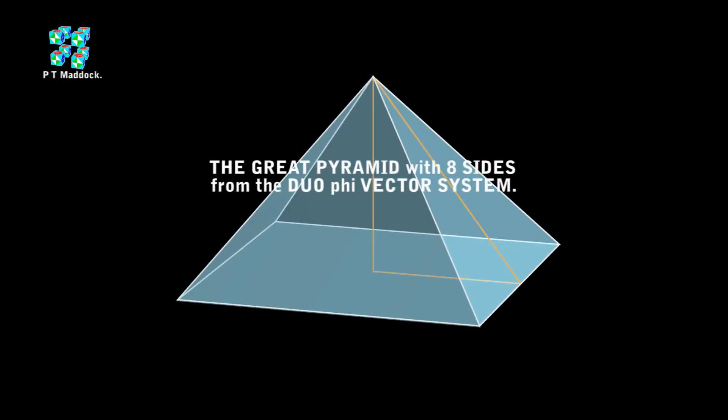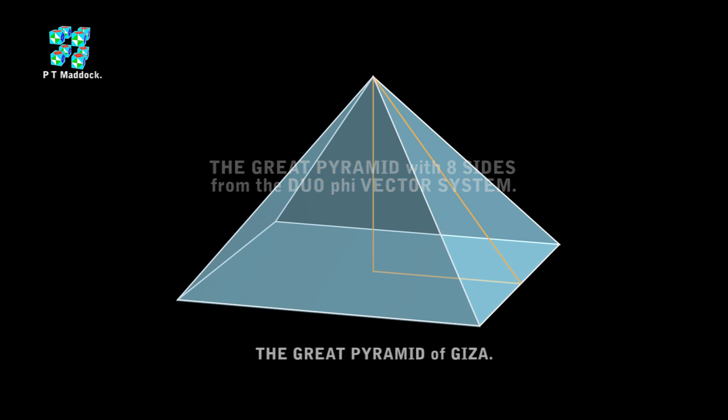Hi, this is Paul, and I'm going to name this video 'The Great Pyramid with Eight Sides from the Duo Phi Vector System.' In my last video, I showed how the Great Pyramid could come from the Duo Phi Vector System.